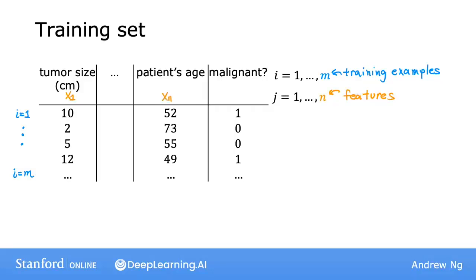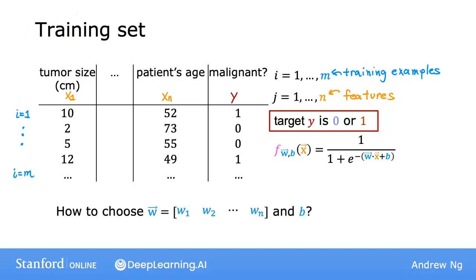And since this is a binary classification task, the target label y takes on only two values, either 0 or 1. And finally, the logistic regression model is defined by this equation. Okay, so the question you want to answer is, given this training set, how can you choose parameters w and b?